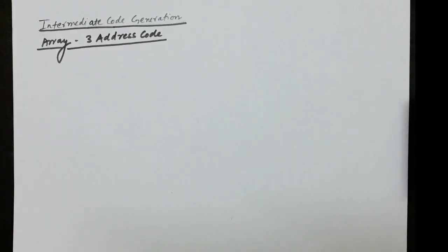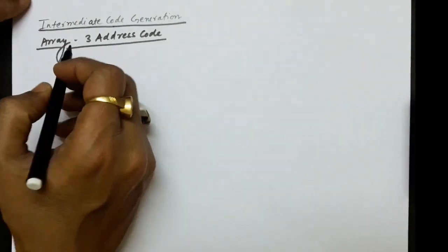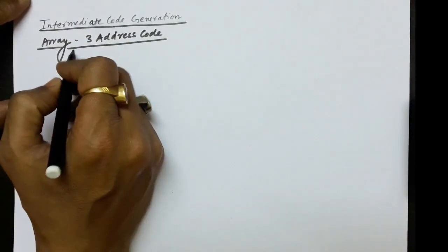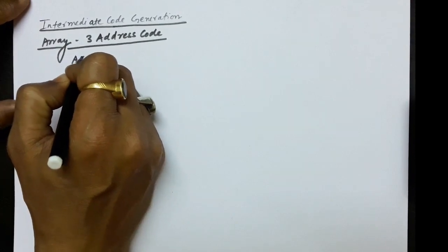Hello everyone, continuing with the lectures of the intermediate code generation. We will now understand how the three-address codes are written for arrays. You must be knowing that in the very first few lectures we have discussed about how for the single dimension array it can be written.